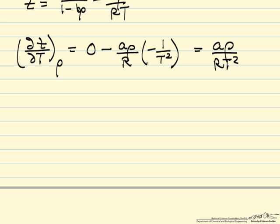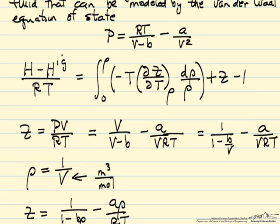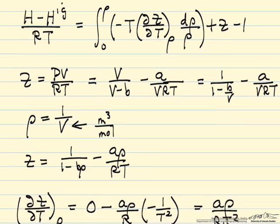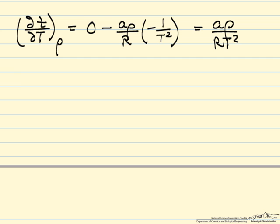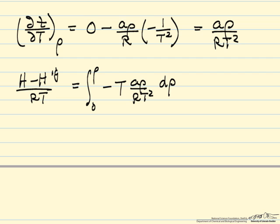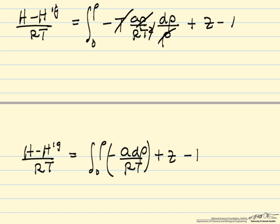So now I'm going to substitute this partial derivative back into this integral equation that allows me to calculate the departure function. So the departure function divided by RT equals the integral from zero to density of minus T times this partial derivative, times the differential density, divided by density, plus z minus one. You can see this T cancels, this density cancels. So this equation just reduces to this.